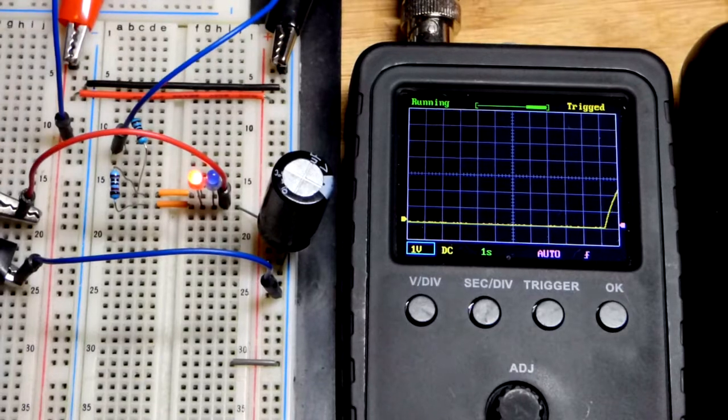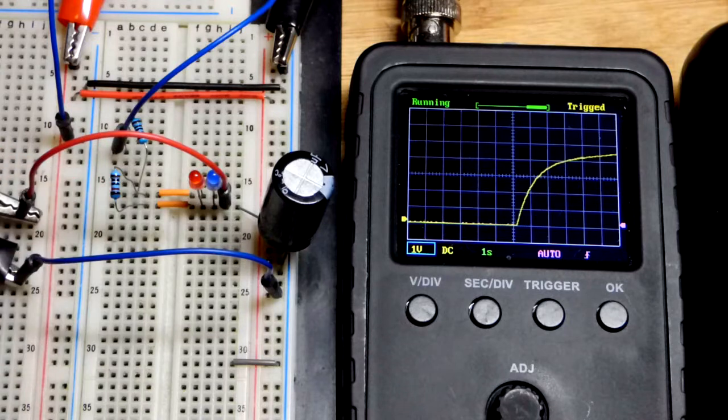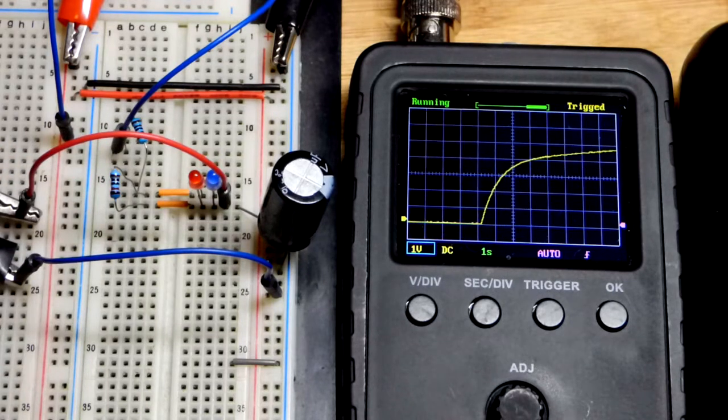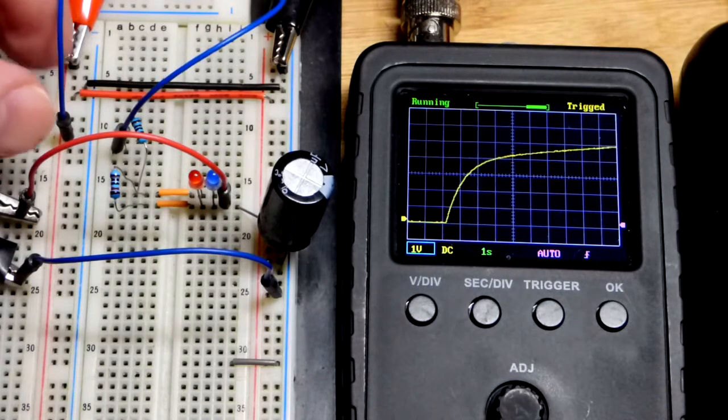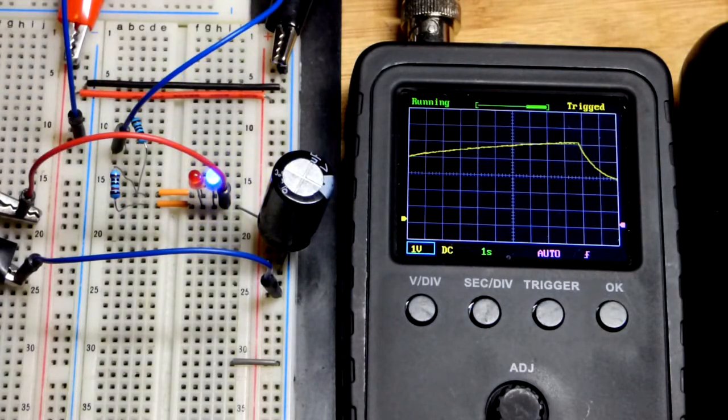We will first charge the capacitor through the LED and then also this parallel resistor right there. And you can see that it rises. And it's going to keep rising as we saw before to 6 volts. You can see it's steadily rising now.